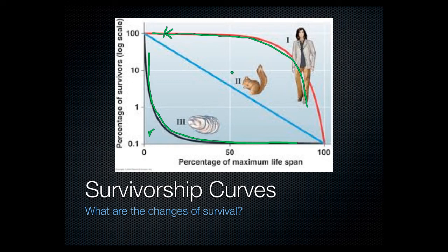In the middle, the Type 2 curve is an organism that shows a pretty even rate of decline over life — not a bunch living and dying off at the end, or a bunch dying off first with a few living to the end. It's pretty much spread out over time. Squirrels are an example that exhibit a Type 2 survivorship curve.